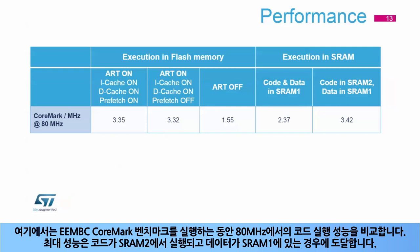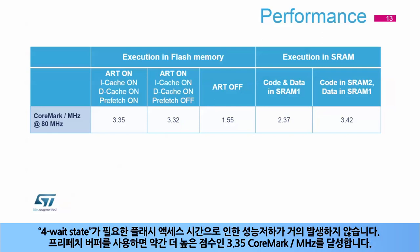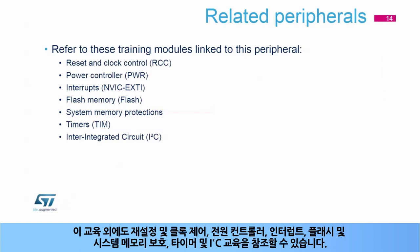Here we compare code execution performance at 80 MHz while running the EEMBC CoreMark benchmark. The maximum performance is reached when the code is executed in SRAM2 with data located in SRAM1. It is also possible to reach maximum performance with code in SRAM1 and data in SRAM2 if SRAM1 is remapped at address 0. When executing from flash memory at 80 MHz, the maximum CoreMark performance is reached when the ART accelerator is enabled, with almost no loss of performance despite flash access requiring four wait states at 80 MHz. Enabling the pre-fetch buffer yields a slightly higher score of 3.3 CoreMark per MHz.